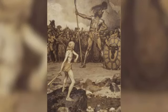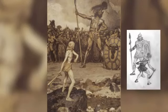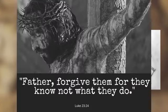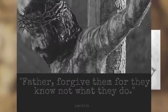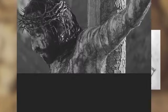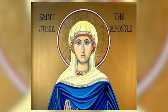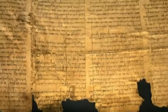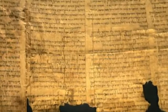Goliath probably was around seven feet tall and not ten. Jesus might not have forgiven those who attended his crucifixion in the original Gospel of Luke. And the apostle Junia mentioned in one of Paul's letters was probably a woman and not a dude, as later scribes would change her to be. All these changes are well known and supported by the evidence. And let us continue.